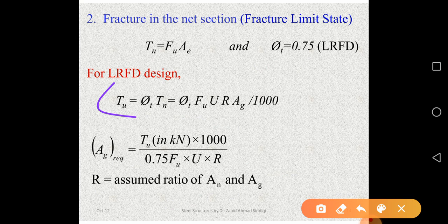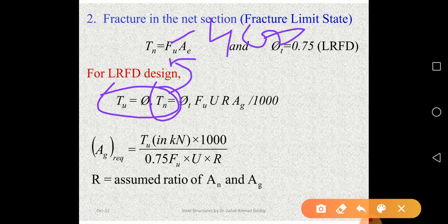Now coming to fracture — the same equation: Tu = φt·Tn, but the difference is in how Tn is calculated for fracture. For fracture: Tn = Fu × Ae, where Fu is the ultimate strength (400 MPa for A36 steel) and Ae is the effective area — as opposed to yielding where it was Fy × Ag (gross area). The effective area Ae will also be explained further.